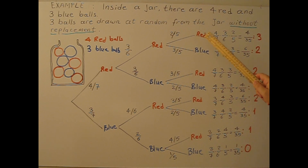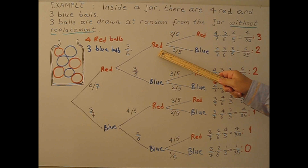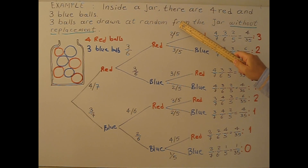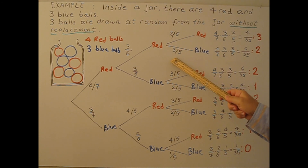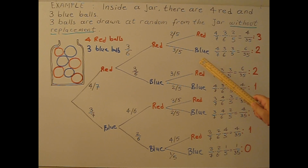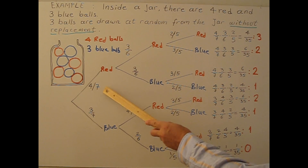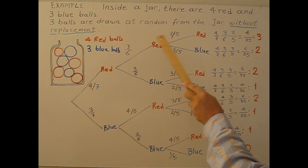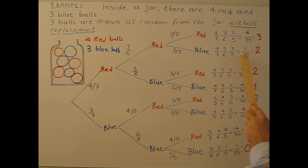Now for the third draw, the denominator becomes 5 because two balls have already been removed. So: first red, second red, third red is 2 over 5; first red, second red, third blue is 3 over 5; first red, second blue, third red is 3 over 5; first red, second blue, third blue is 2 over 5. I fill in all the numbers on the tree, then multiply the probabilities along each branch. For example, red, red, red gives 4 over 7 times 3 over 6 times 2 over 5.